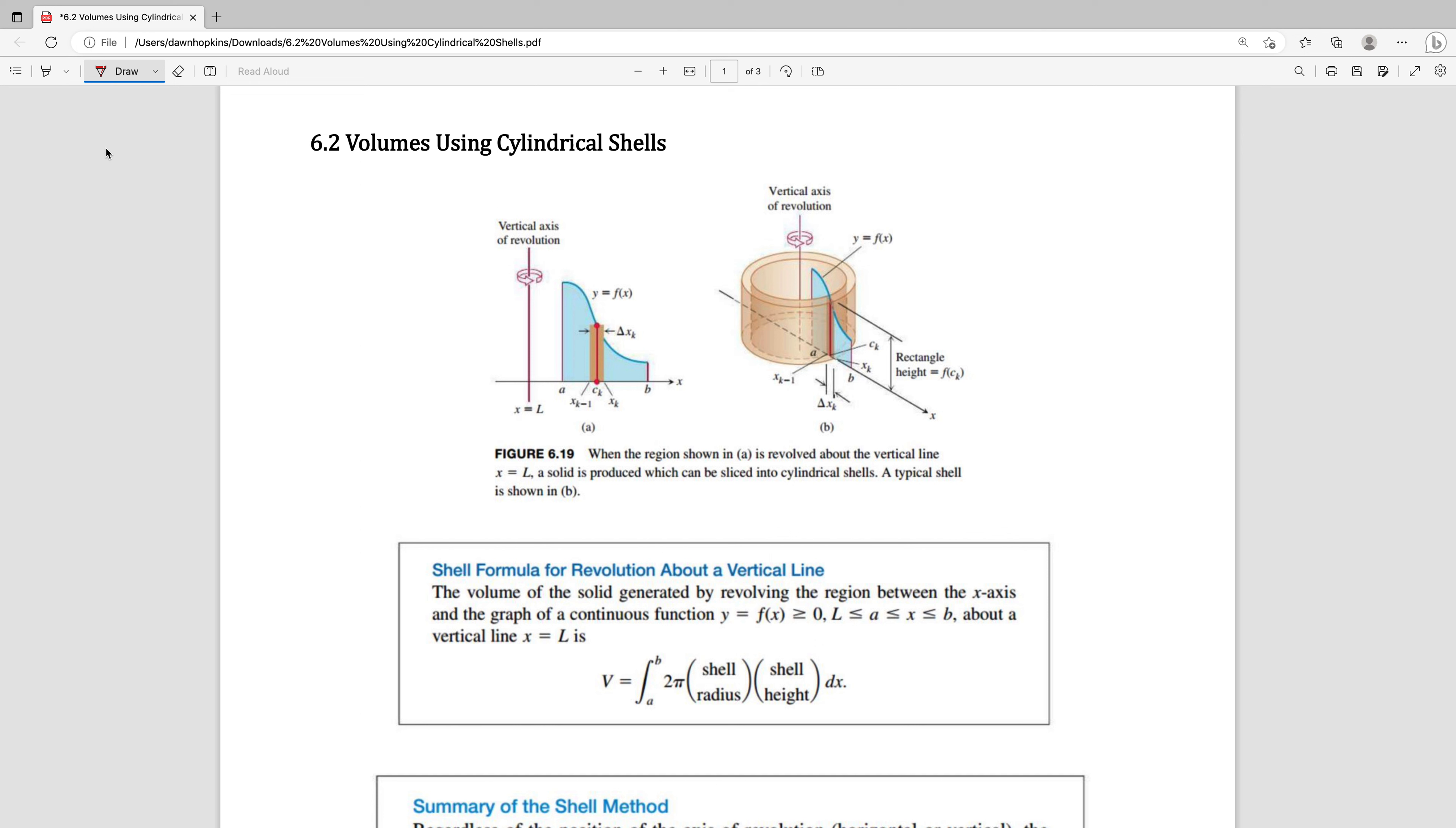Continuing in chapter 6, we're going to look at section 6.2 which shows another way of finding volumes. This method uses the idea of cylindrical shells.